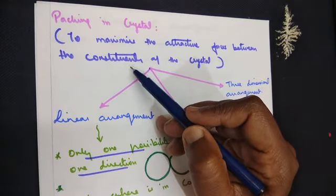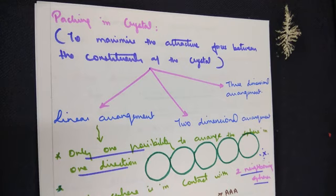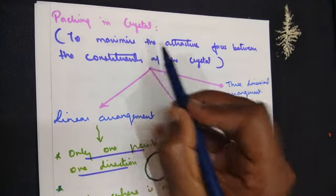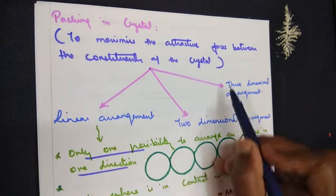Constituents when we say, they may be ions, atoms, or molecules. In the previous class you learned how many atoms are present in a cubic unit cell — whether simple cubic, body centered cubic, face centered cubic, or edge centered cubic. Here we are seeing in what pattern they are arranged. The purpose is to maximize the attractive forces. Packing in crystal is explained in three different concepts.